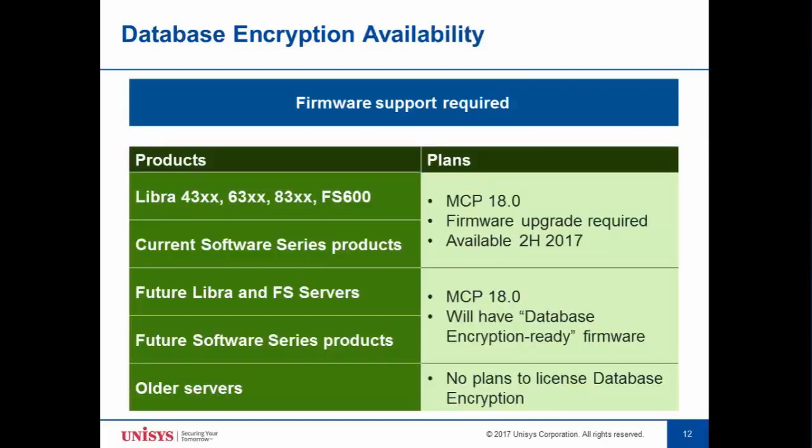Regarding availability: for the 4363, 6383, or FS600, the feature is available on MCP 18.0 but requires a firmware upgrade, which will be available in the second half of this year. The same applies to current Software Series products. For future Libra, FS servers, or future software series products, database encryption is already ready in the firmware. For older systems, there is no plan to license database encryption. That concludes the database encryption presentation.